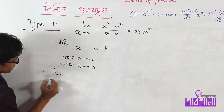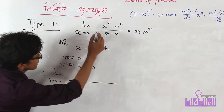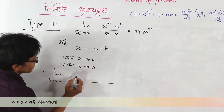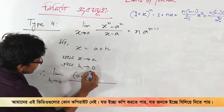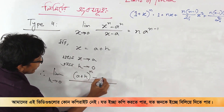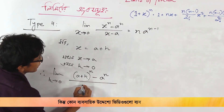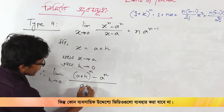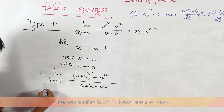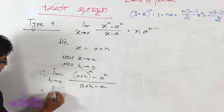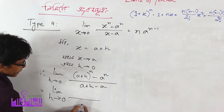So: limit h tends to 0 of (a plus h) to the power n minus a to the power n, all divided by (a plus h) minus a.